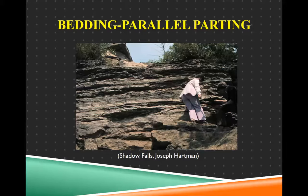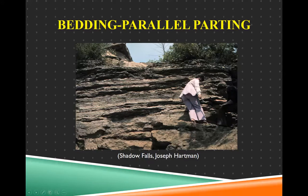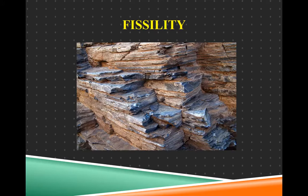Here's that example of bedding parallel parting. You can see that once upon a time there was probably a lot of rock above — going out of the photo where the sky shows — and all that is eroded away, unloading this section of rock in the photo, so it is expanding and splitting. Fissility allows it to break apart really easily into flakes and chunks, like in this shale here.